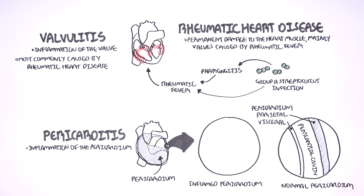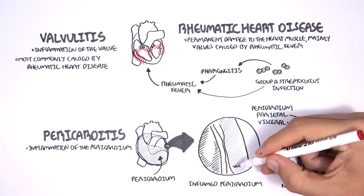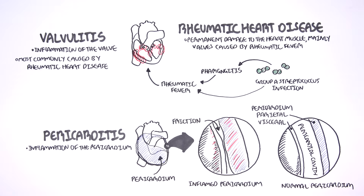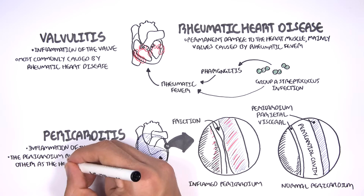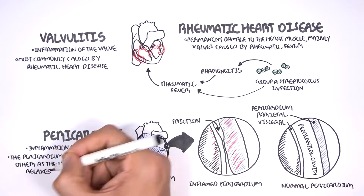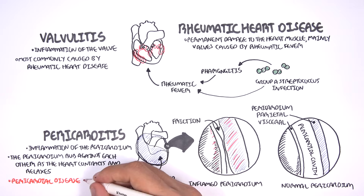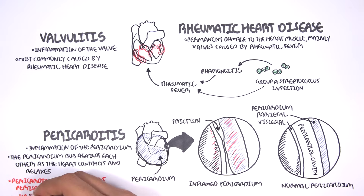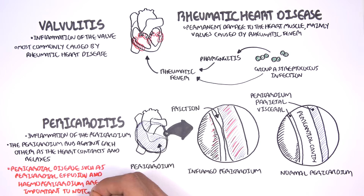In an inflamed pericardium, we have disruption of the pericardial layers, inflammation, with thickening and damage to the pericardium, resulting in friction of the pericardial layers and pain — the pericardium rubs against itself as the heart contracts and relaxes. Other pericardial diseases are pericardial effusion, which can lead to tamponade, and hemopericardium, which is life-threatening.